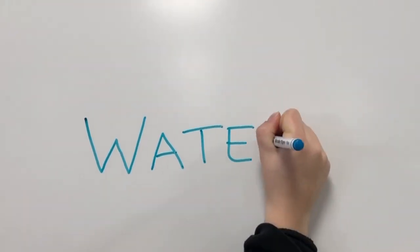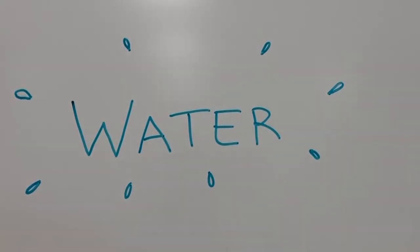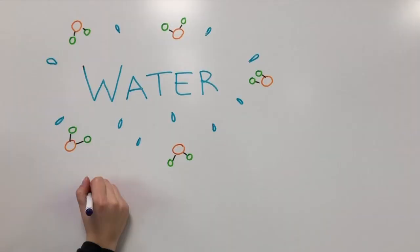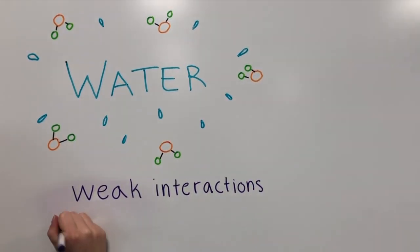Water is the most abundant substance in the living system. It is said that the first living organism arose in an aqueous environment. We are going to talk about weak interactions in aqueous systems.